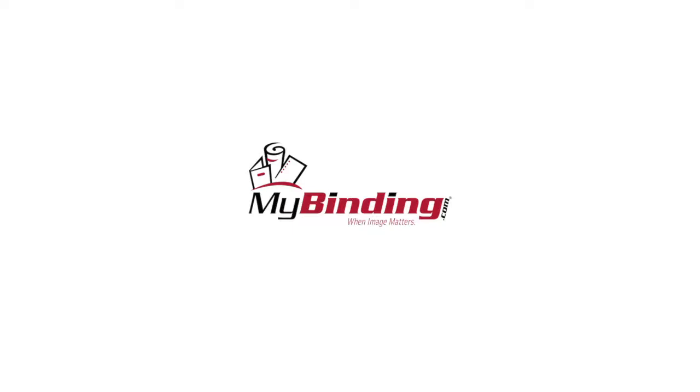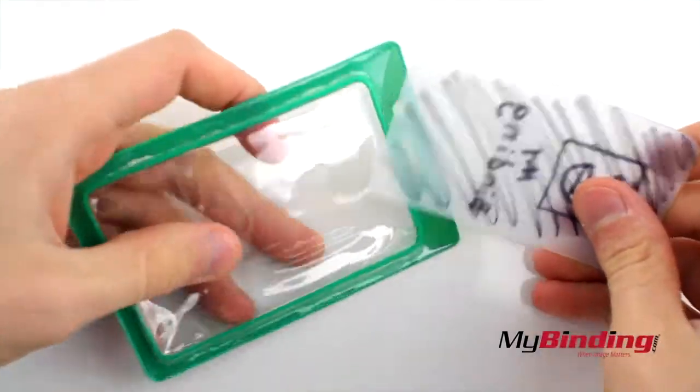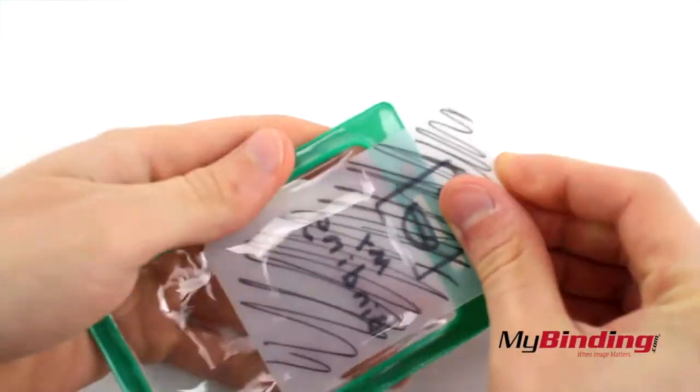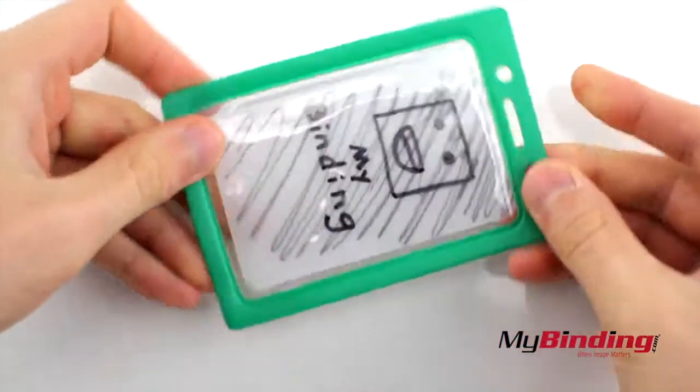Welcome to MyBinding video. These are colored framed badge holders. Insert your card into the top of the holder. As you can see, both sides are still visible, and now your card has a nice border.